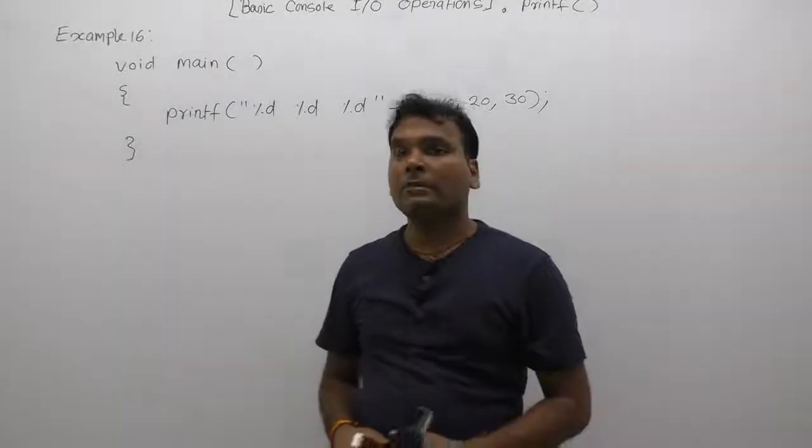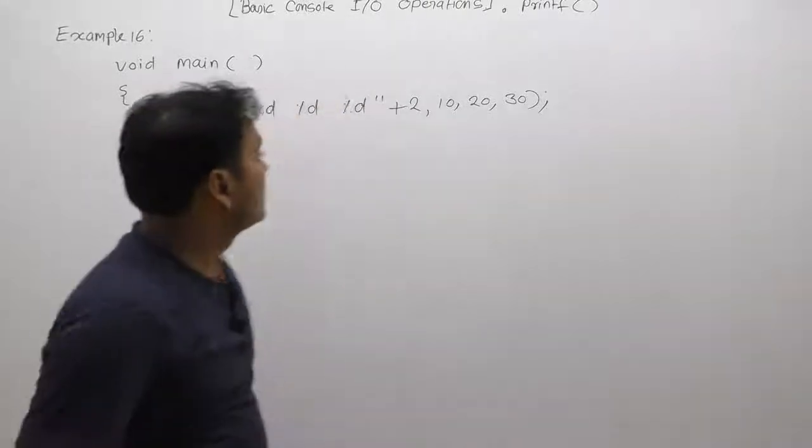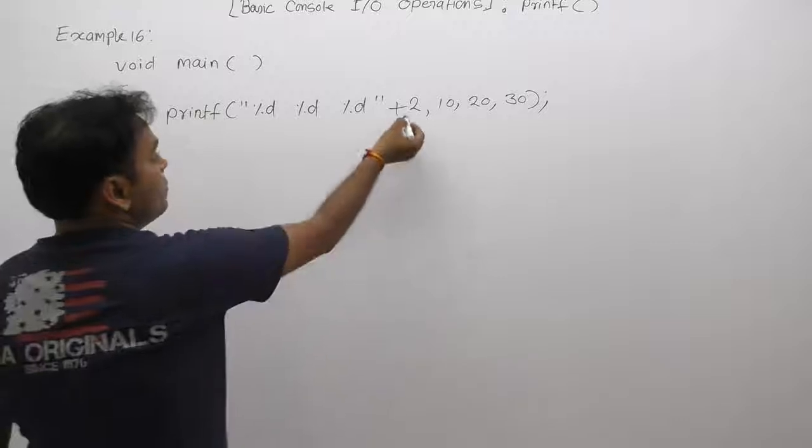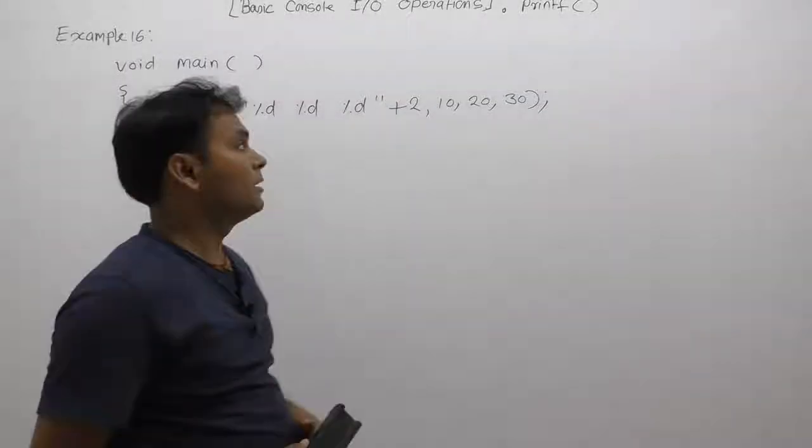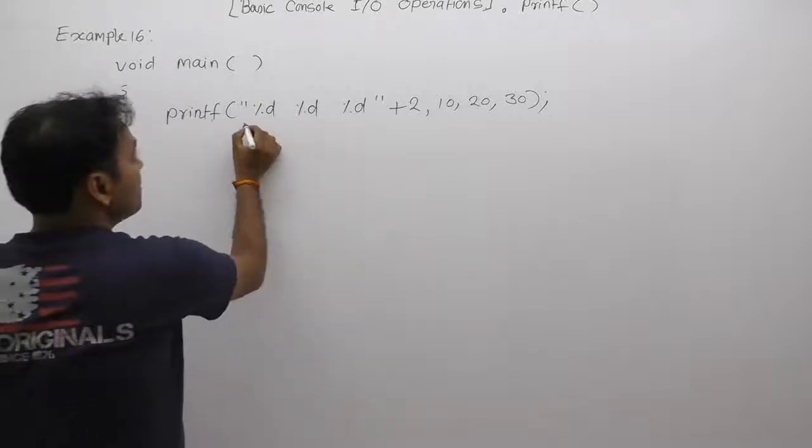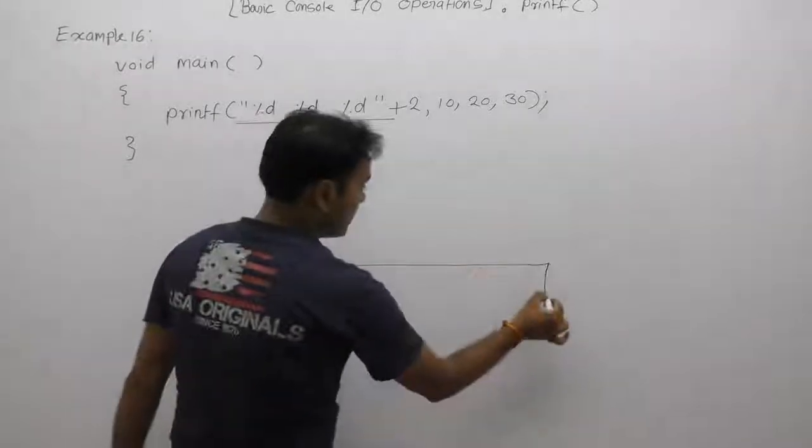Our next example is based on the previous concept. Here we are adding two to the format string, whereas in the previous example we were simply adding six. First, before processing this printf statement, we need to represent the memory allocation for the given string.